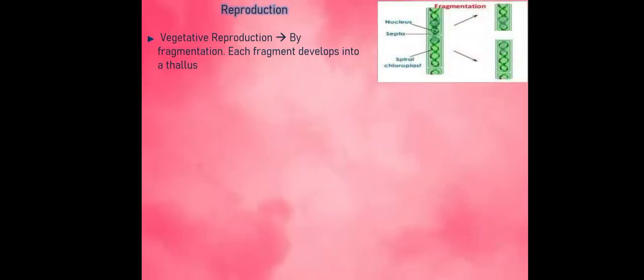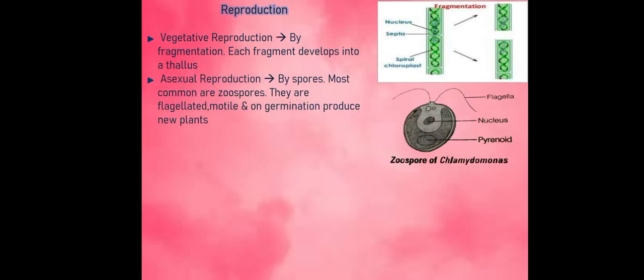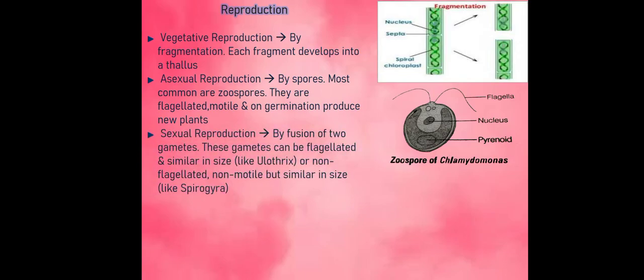Their reproduction is by vegetative reproduction by fragmentation, each fragment develops into a thallus, or by asexual reproduction by spores. Most common spores are zoospores, they are flagellated, motile, and on germination they produce new plants, or sexual reproduction by fusion of two gametes.